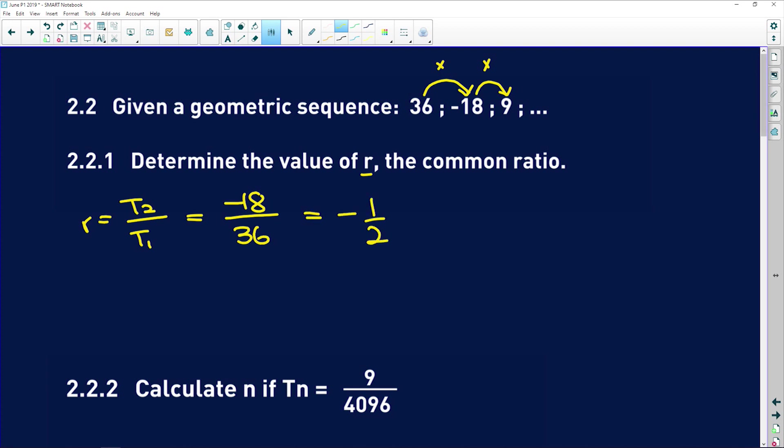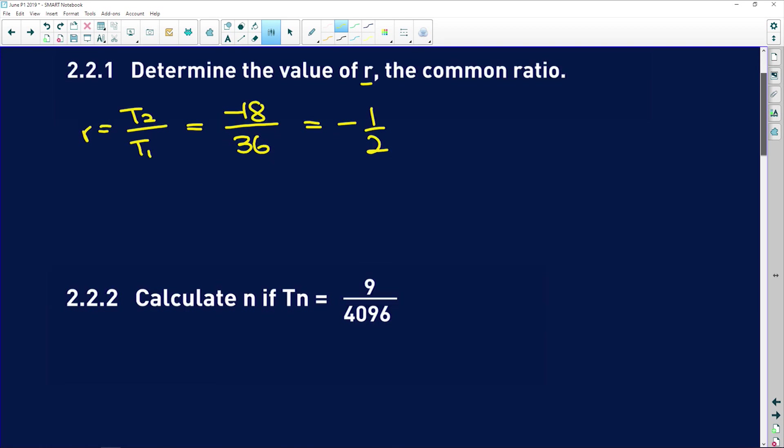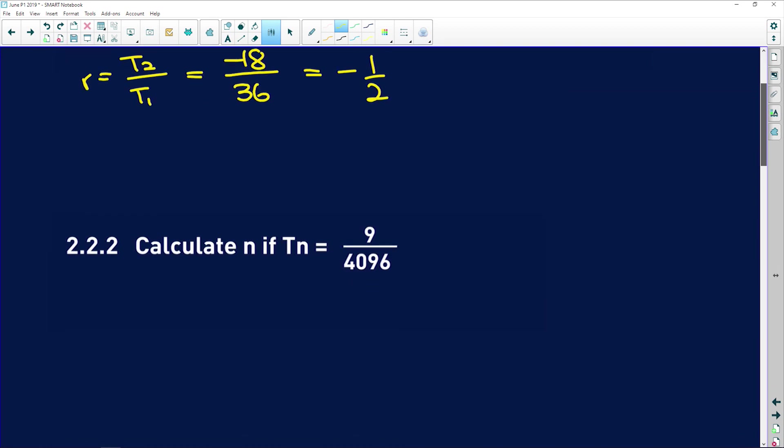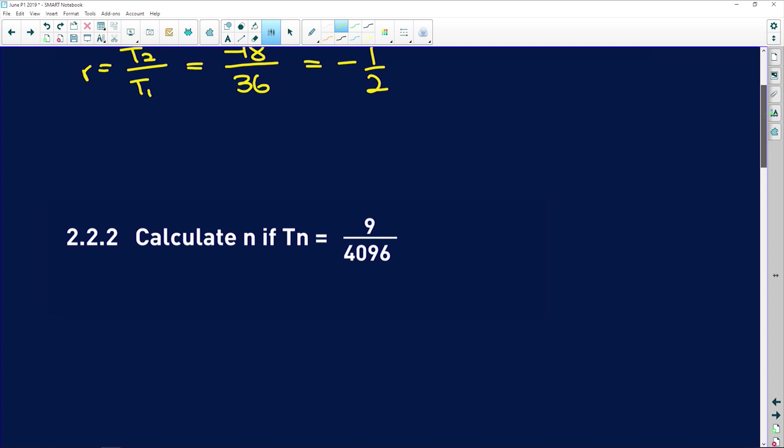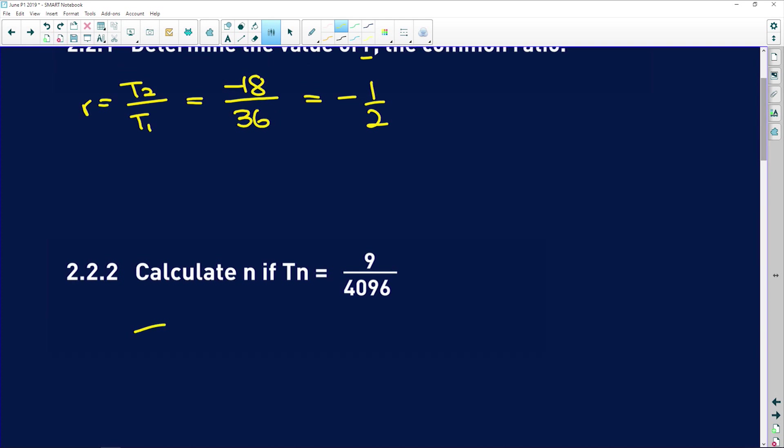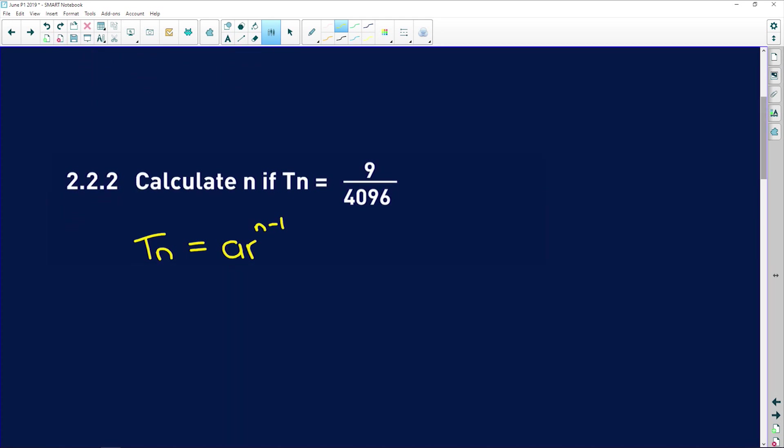Next it says, calculate n if Tn is equal to 9 divided by 4096. First thing you need to do is get an expression for Tn. Remember, in your geometric sequences, you have a multiplied by the ratio to the power of n minus 1. So in this instance, a, which is our first term, is 36, multiplied by our ratio, which was negative 1 half, to the power of n minus 1.